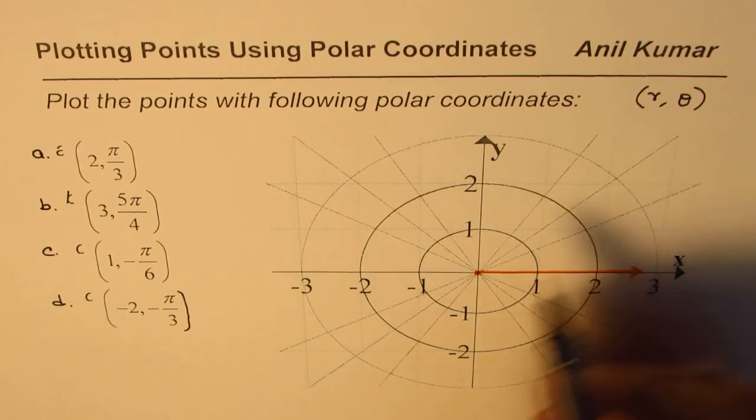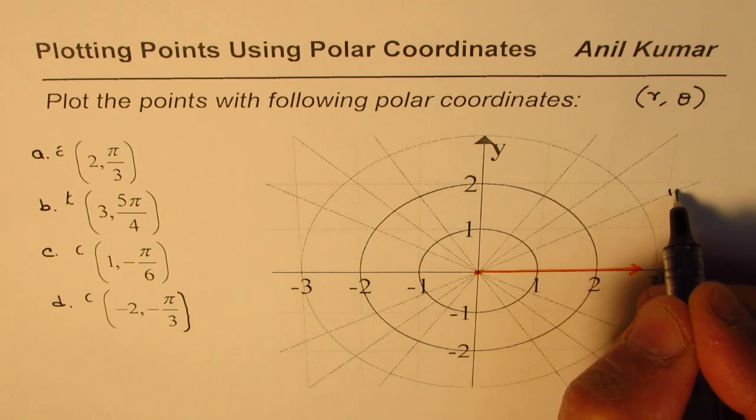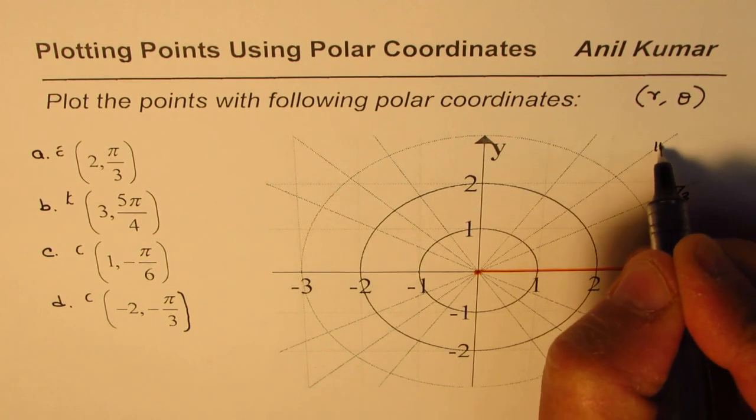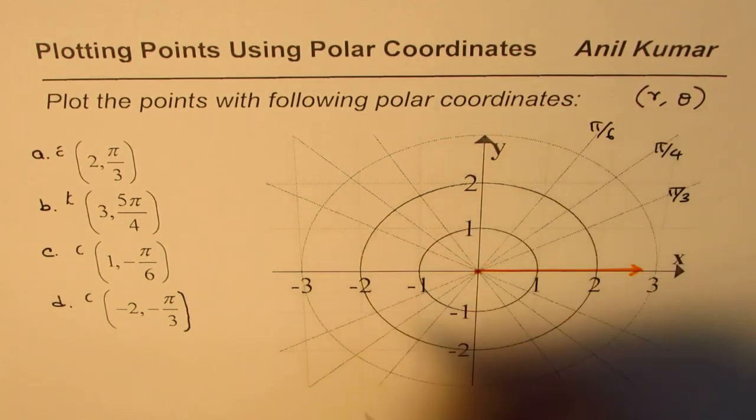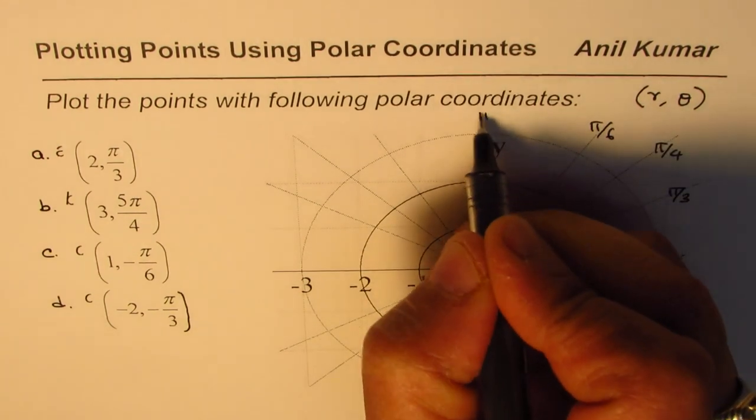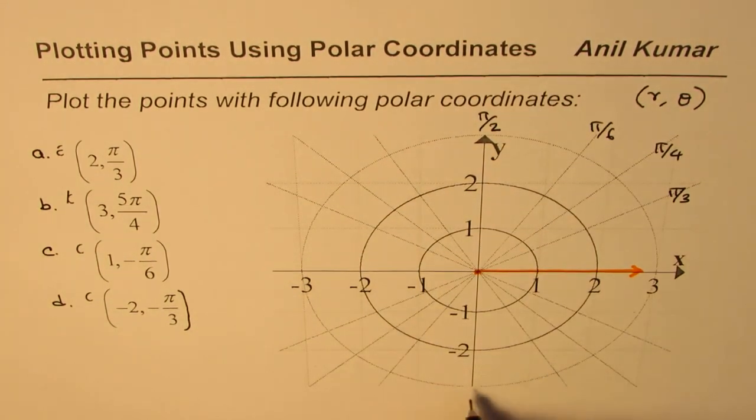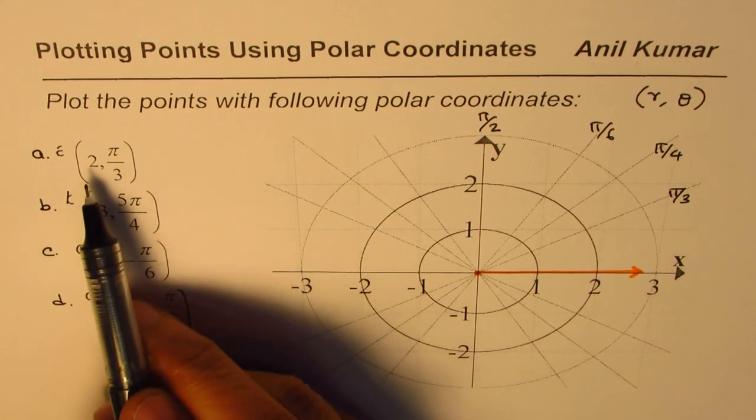Now these lines which are drawn are to help you. This is π/3, this is π/4, this is π/6 and so on, and of course this is π/2.